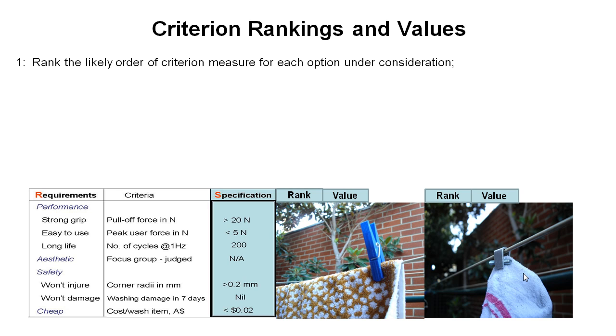So the first step in this process is for us to go through and rank the likely order of criterion measures for each of these two options which we're considering. So if we look at the first performance requirement being strong grip and pull-off force, we can rank these two concepts under consideration. And we would rank this option number one because it has a higher pull-off force than the conventional style sprung peg which gets a number two.